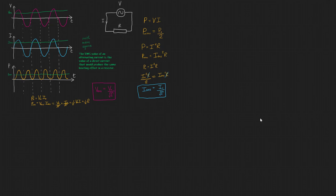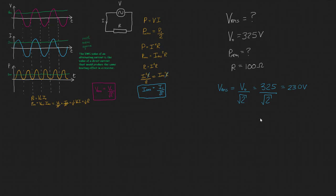Calculate the RMS voltage of an AC supply with a peak voltage of 325 volts and calculate the mean power dissipated in a 100 ohm resistor. So first of all, let's calculate our RMS voltage. So V RMS is equal to V0 over root 2 of 325 divided by root 2 gives us 230 volts,